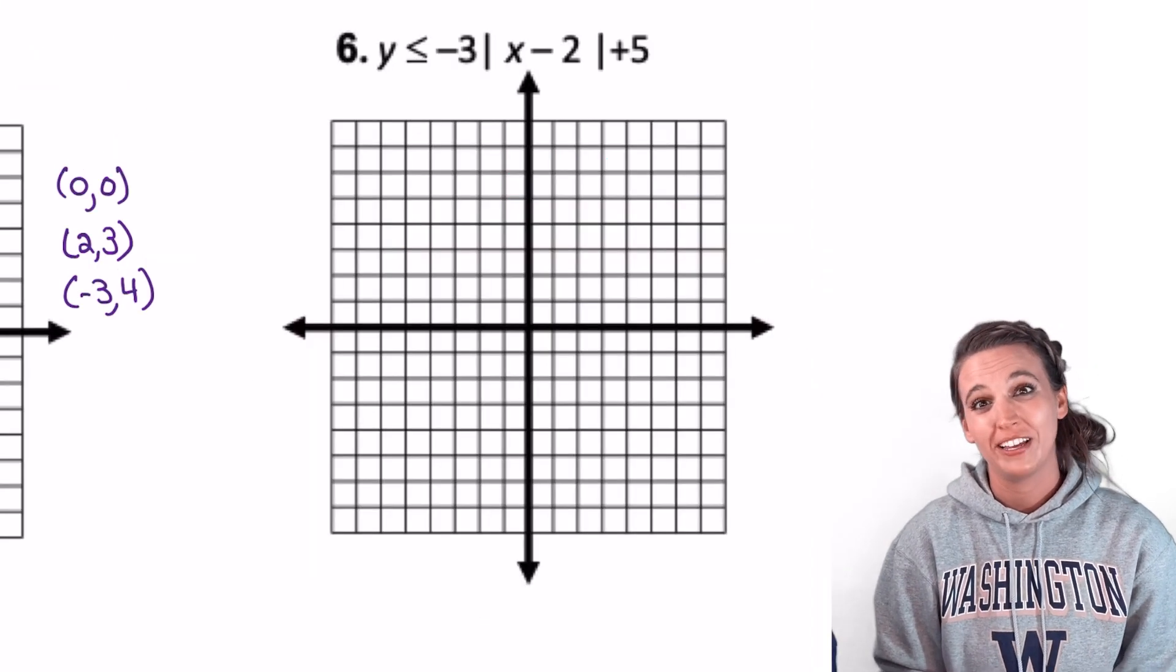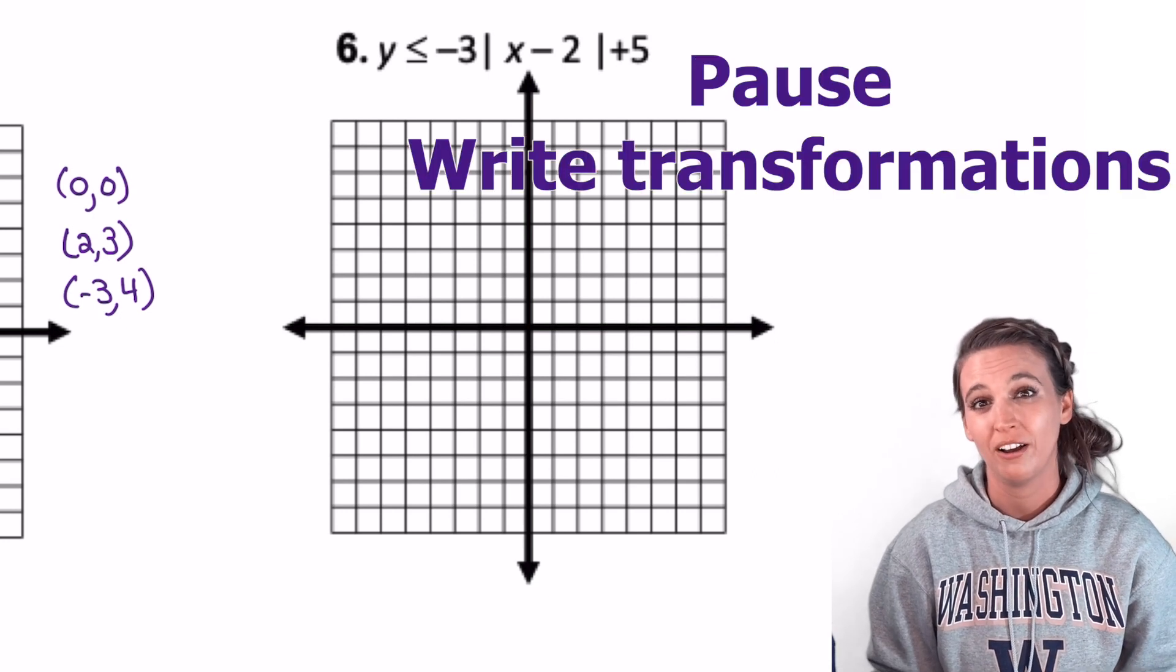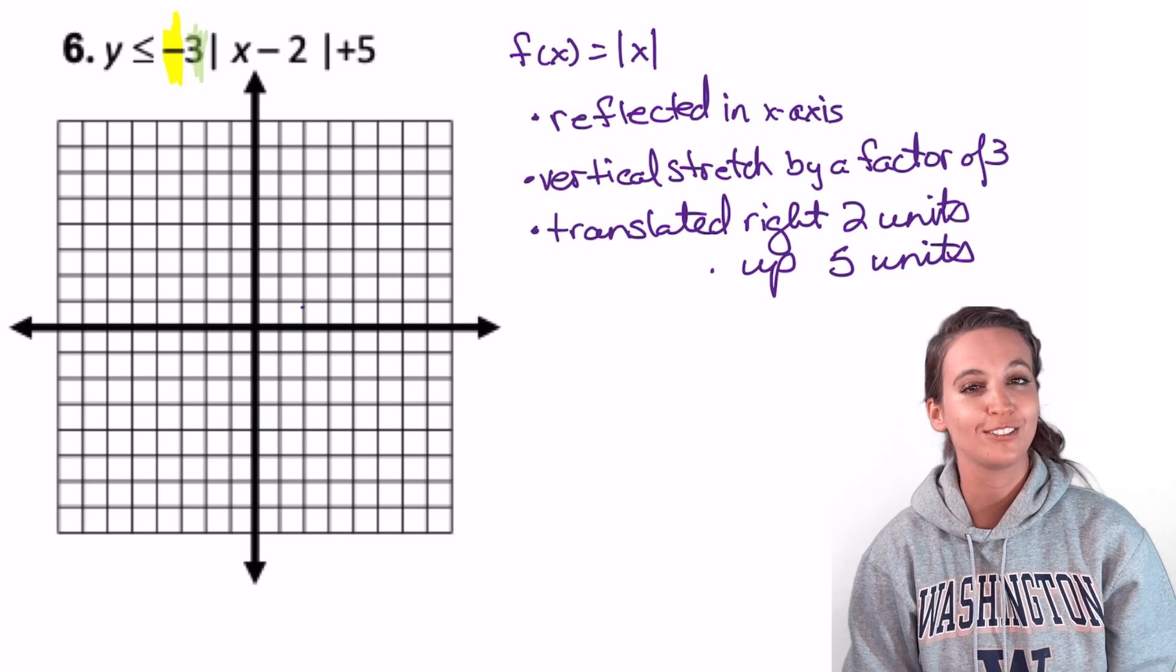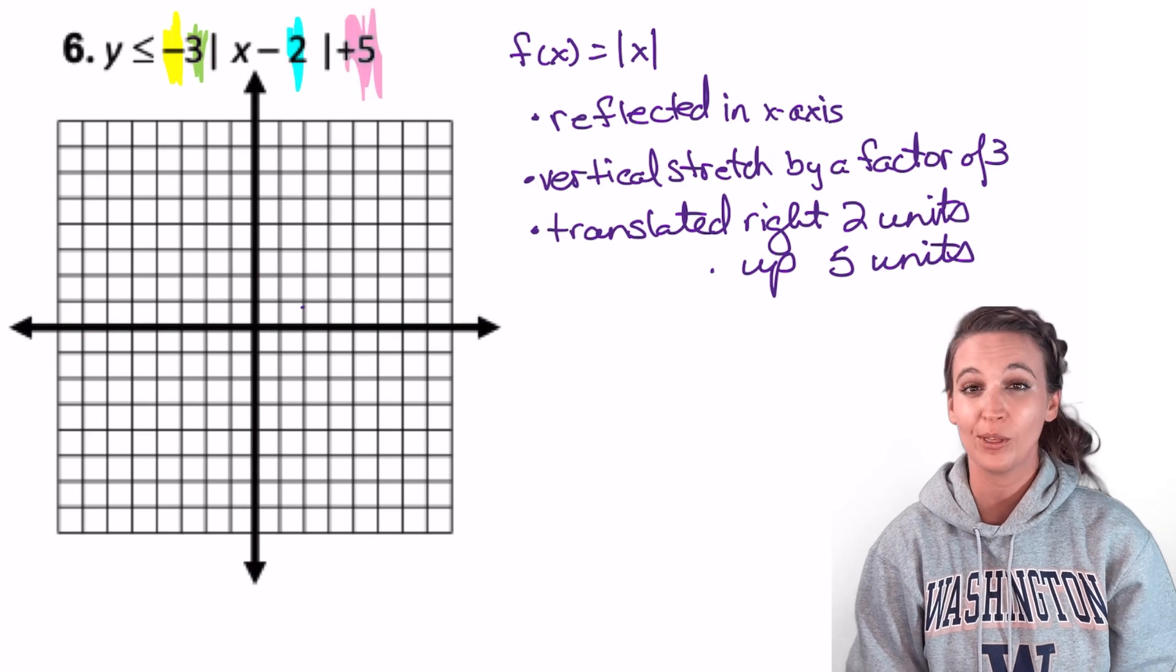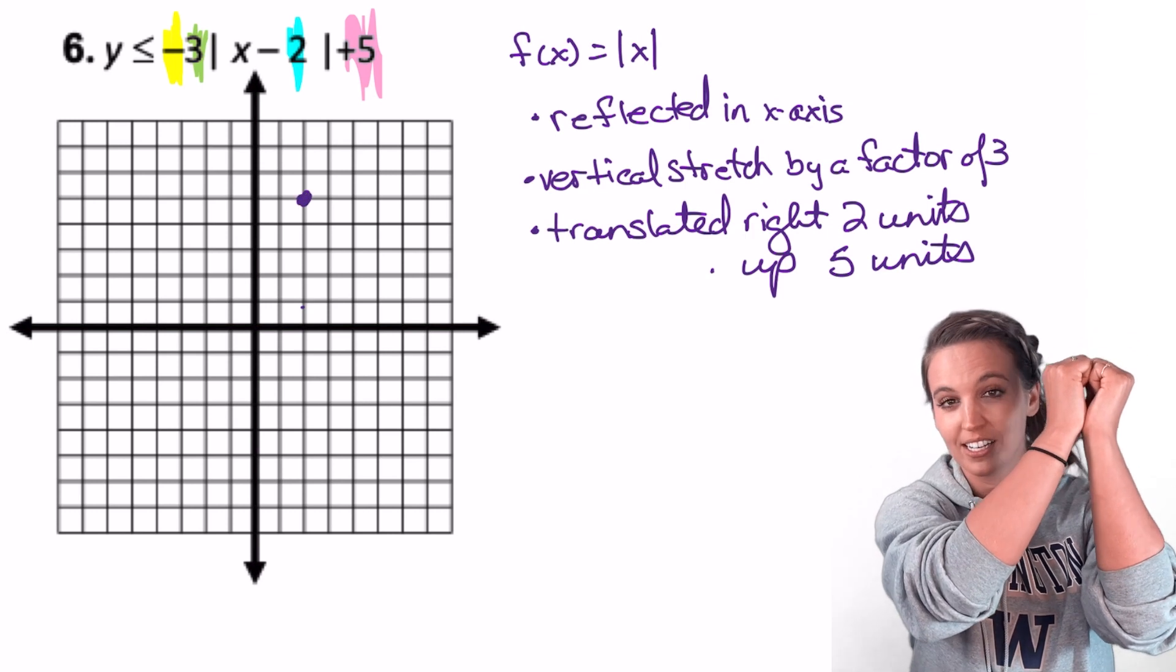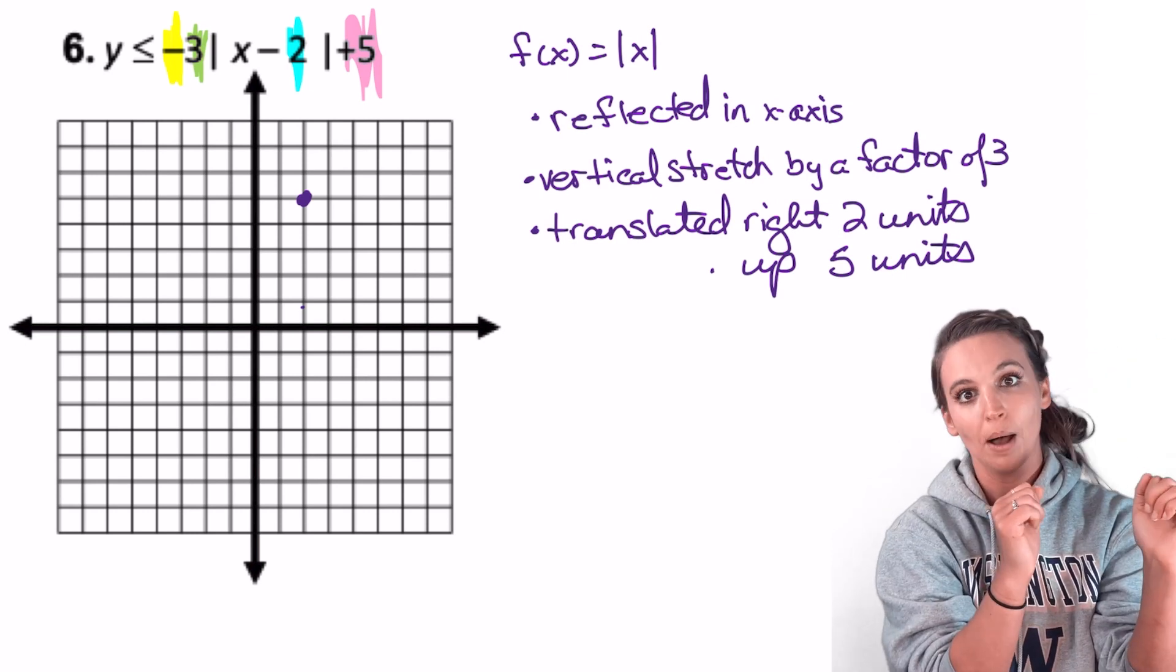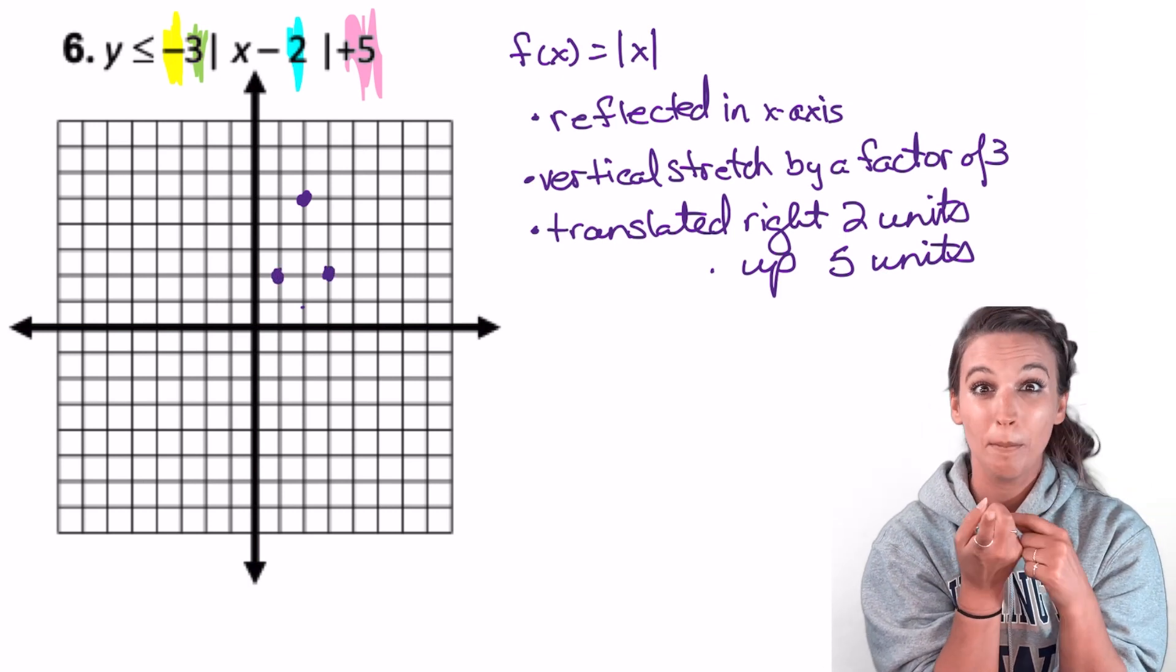Number six is an absolute value graph again, but there's a lot going on here. Take a moment to write down all the transformations you see on the parent function y equals absolute value x. We have a reflection in the x-axis, a vertical stretch by a factor of 3, a translation to the right 2 and up 5 units. So let's get the vertex on the graph. Right 2 and up 5 units. Normally we would go over 1, up 1, back to the vertex, and so on. But now we're reflected, so we're going to go down instead of up, and we have a vertical stretch by a factor of 3. Does that mean it affects my x's or my y's? My y's.